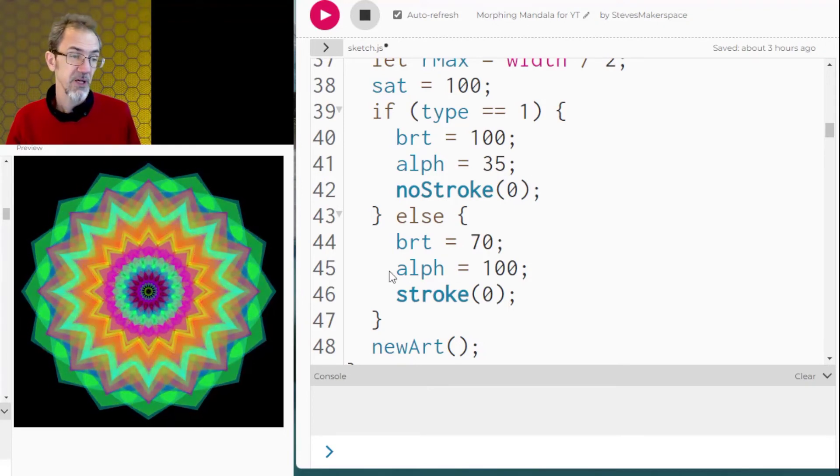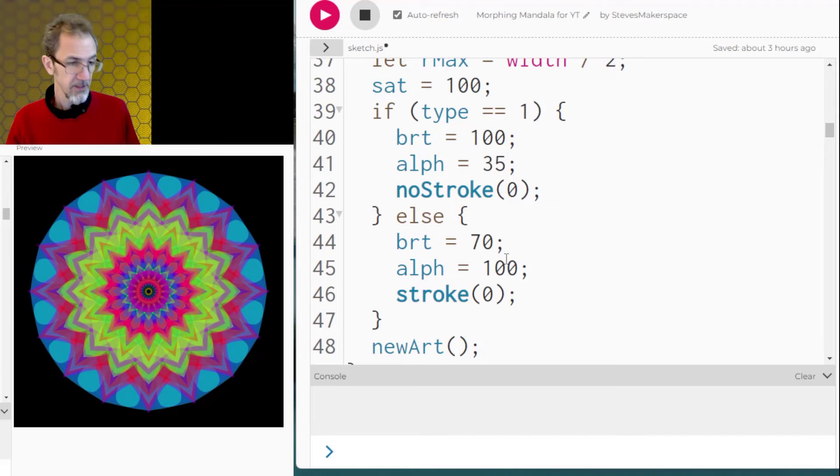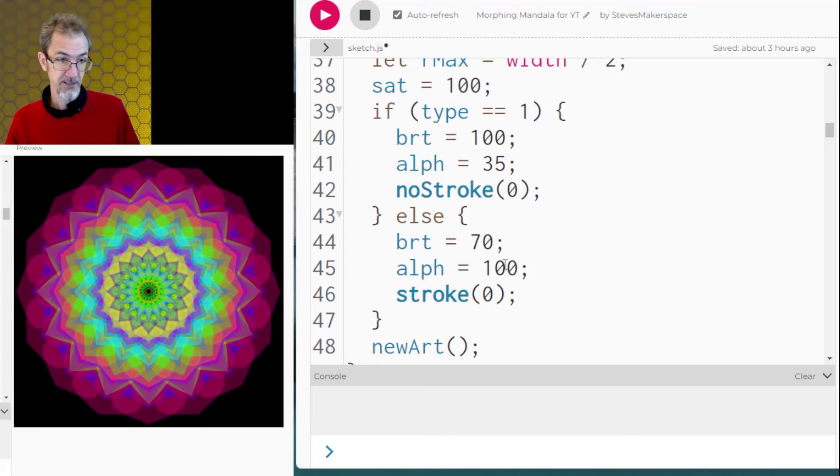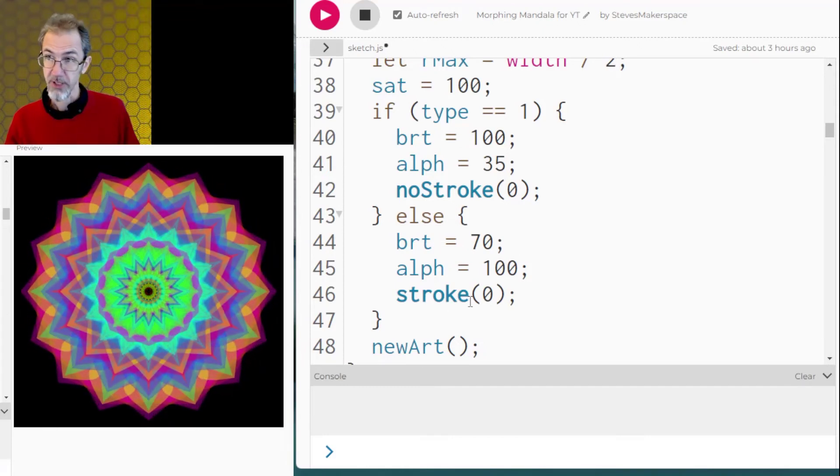And if it's type 2 mandala then the alpha is way up. The brightness I had lower because it was too intense and a line is drawn around all the petals.